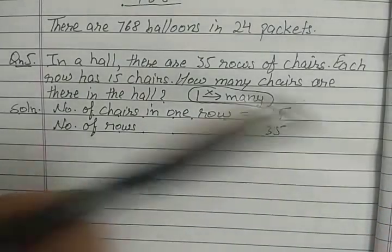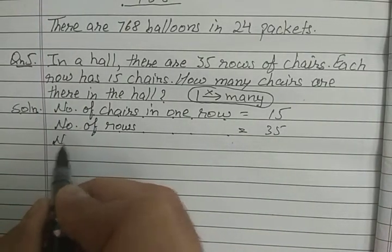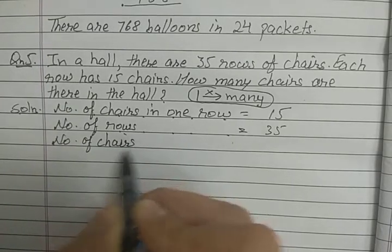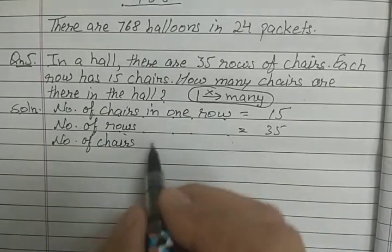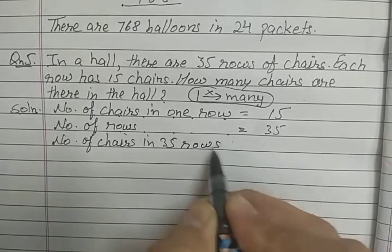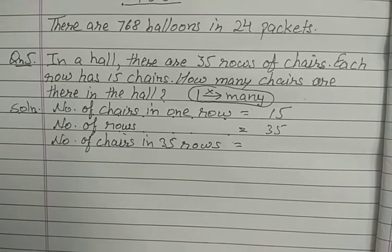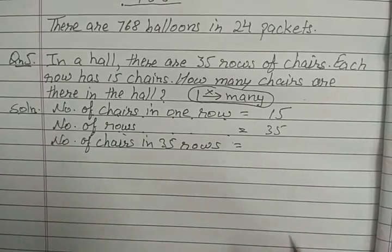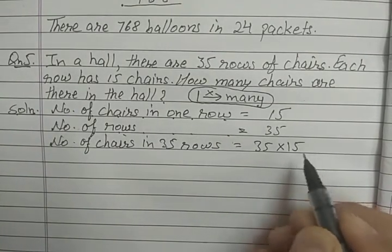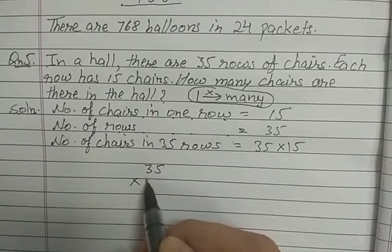Now what we have to find out: number of chairs in the hall. You can say number of chairs in 35 rows. One row mein given hai aur 35 rows ki chairs aapko batani hai, so we will multiply: 35 multiplied by 15.